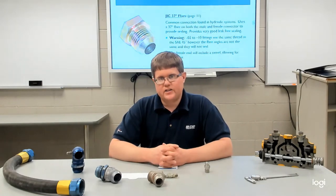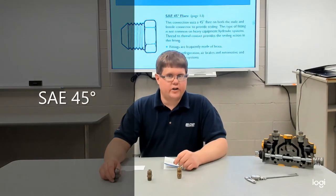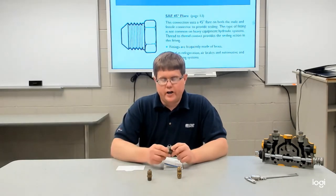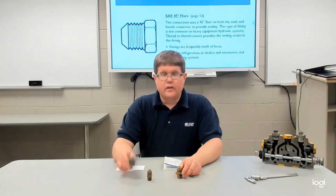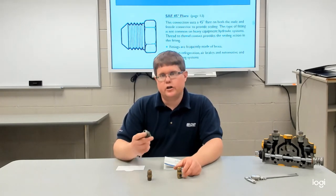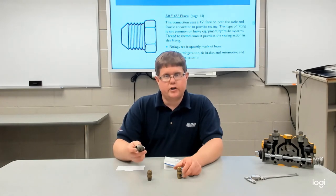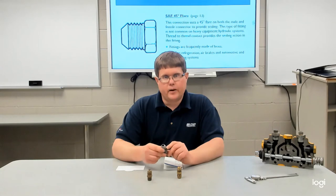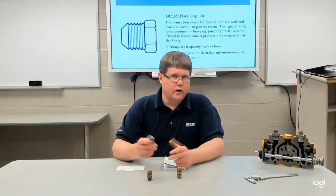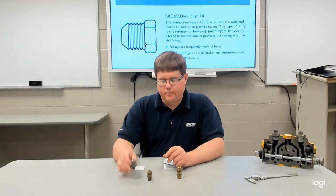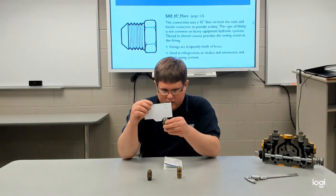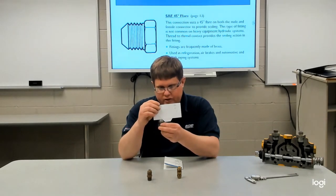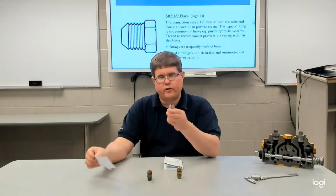The next connection is SAE 45, which is found more on automotive and truck applications. It looks very similar to JIC but uses a 45-degree sealing angle instead of 37 degrees. SAE 45 is commonly used on fuel systems, air brakes, refrigeration, and air conditioning — more on heavy trucks and automotive applications, not typically with hydraulics, though you may find them on dump trucks. Using the gauge, you can confirm: it doesn't match the 37-degree side, but it seats nicely at 45 degrees.